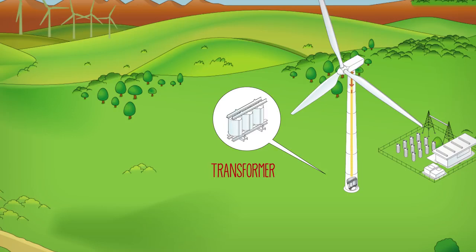There, a converter transforms it into alternating current, which is the most commonly used kind, and a transformer raises the voltage for transport inside the wind farm.